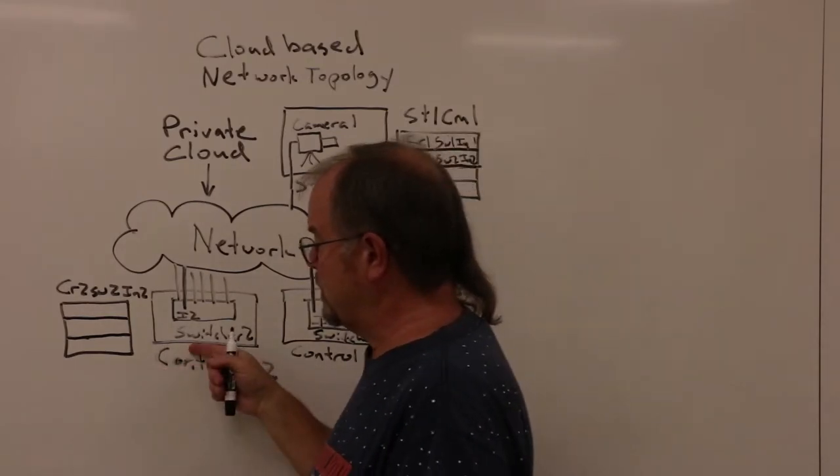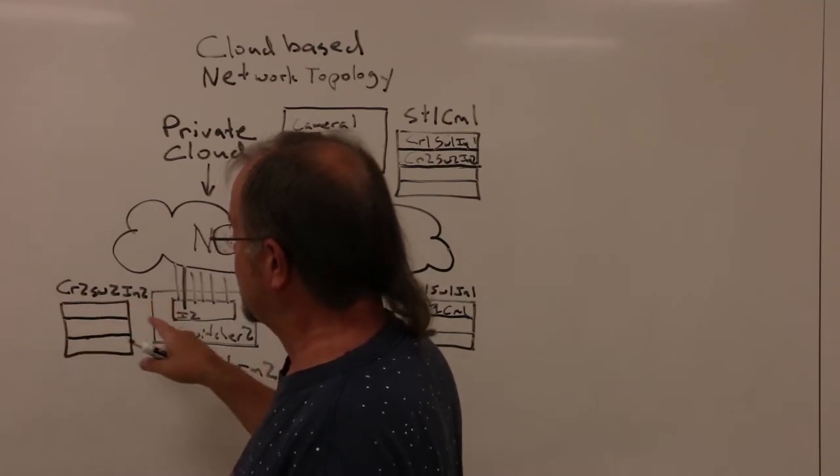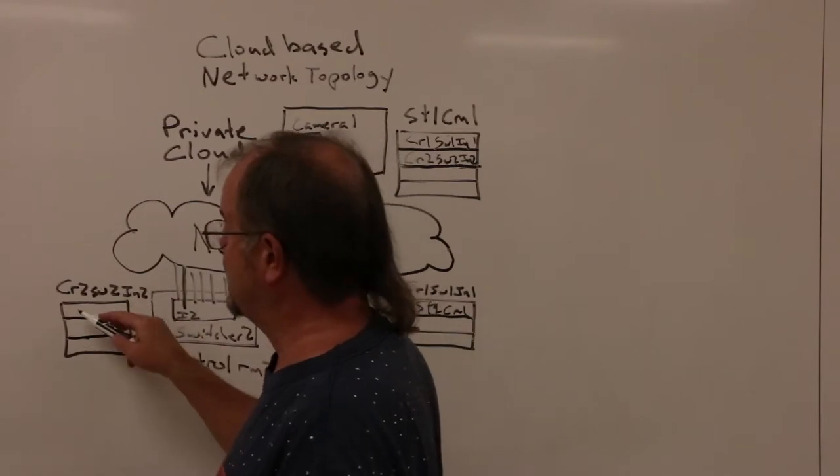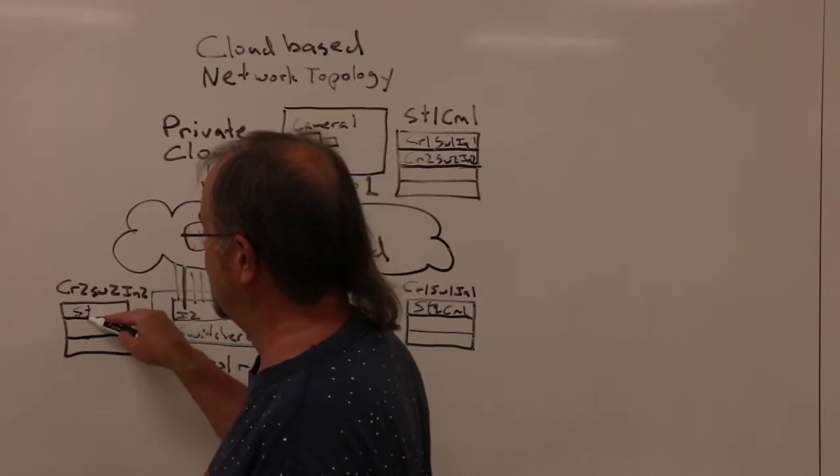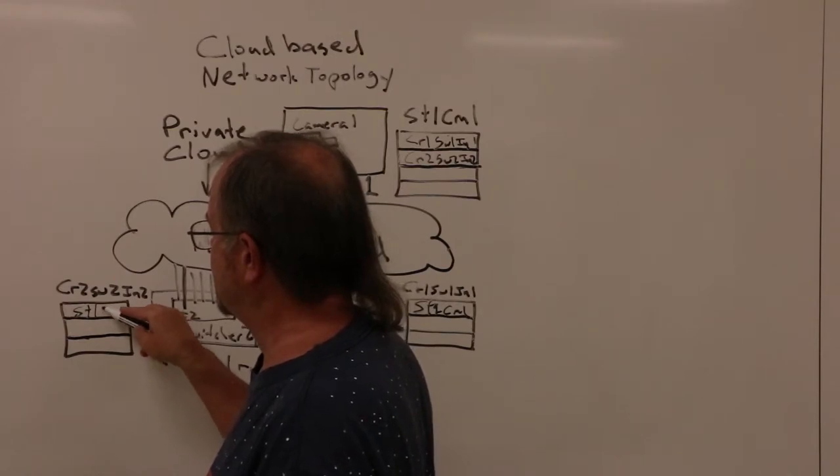And likewise, in the switcher in control room 2, we make a matching entry that says input 2, control room 2, switcher 2, input 2, gets its input from studio 1, camera 1.